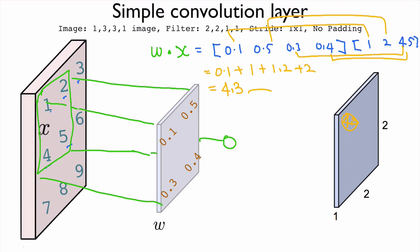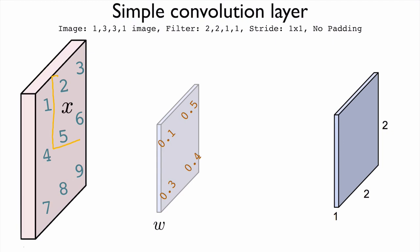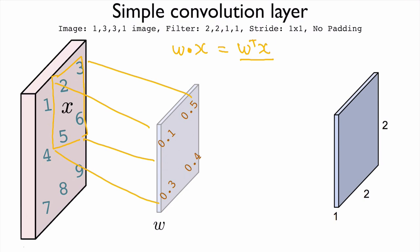We move the window to the next position and in the same manner, using our filter, we compute w dot product with x — also expressed as w transpose times x, which is a matrix multiplication. By doing that, we get the next value, and we continue moving this window around the entire image.